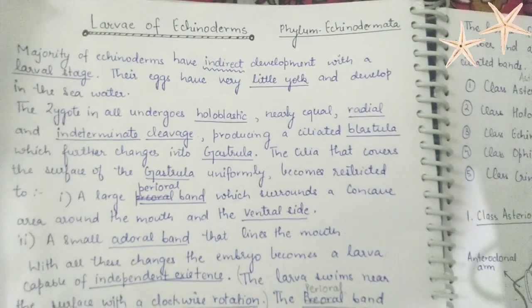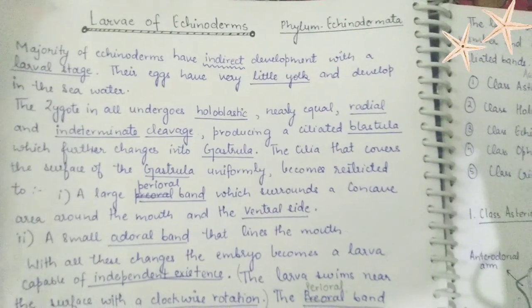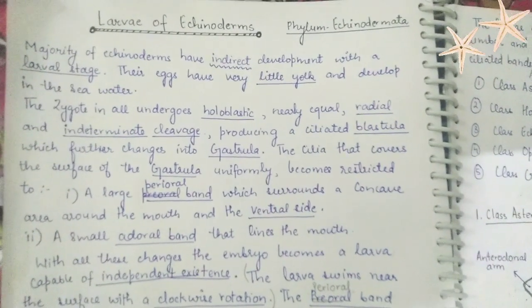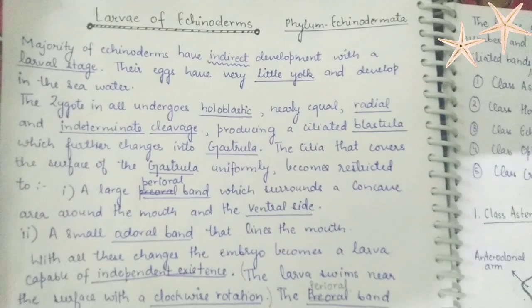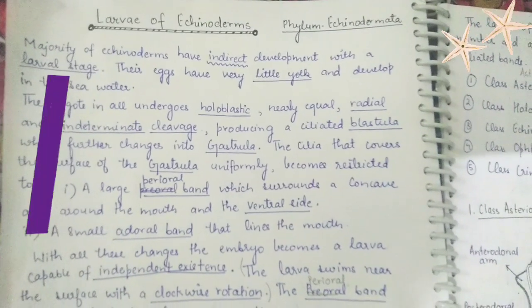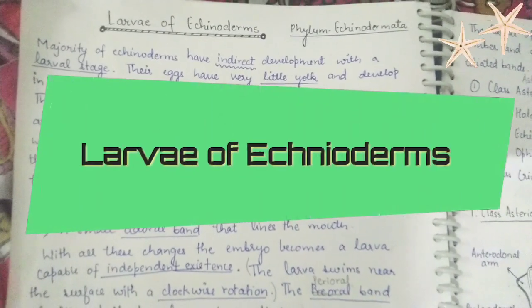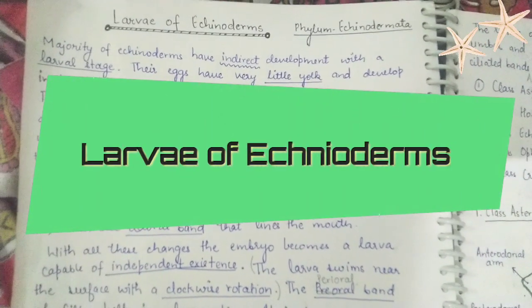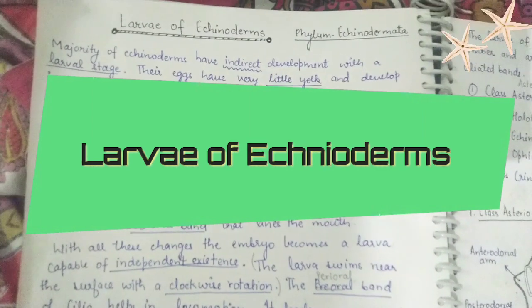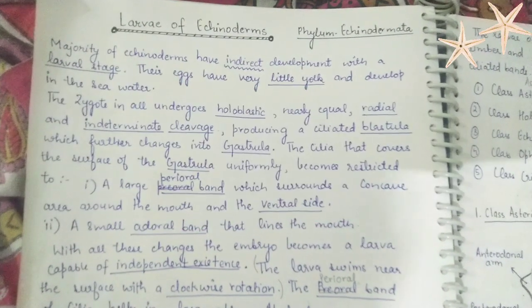Hello friends. In this video we are going to study about the larvae of echinoderms. It belongs to the phylum Echinodermata. There are total 5 different classes in Echinodermata in which we will study about their larvae.